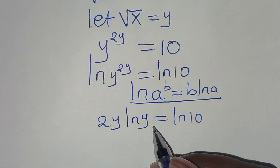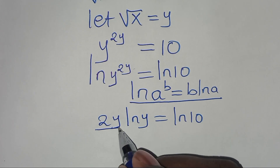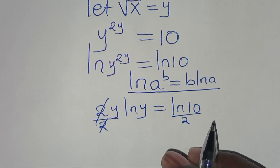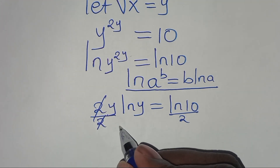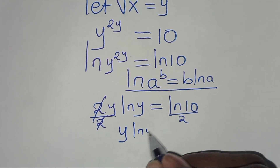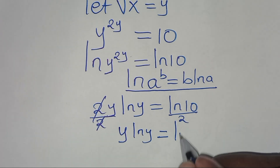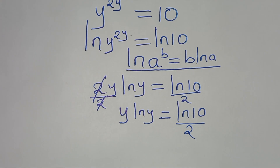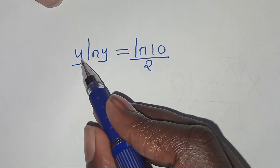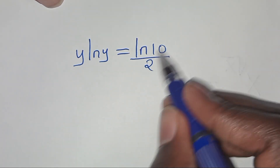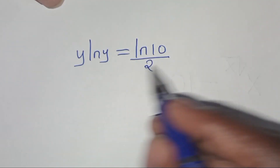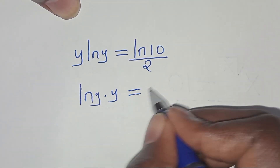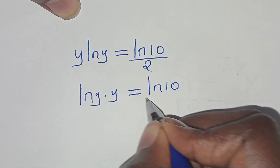The next step is to divide both sides by 2, so that we have y·ln(y) equals ln(10)/2. This is the same thing as ln(y)·y equals ln(10)/2.